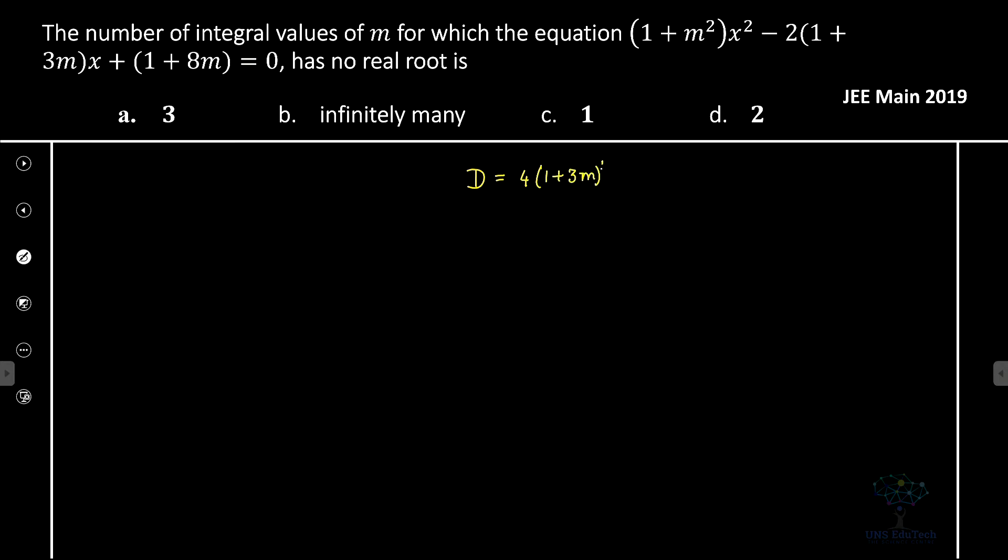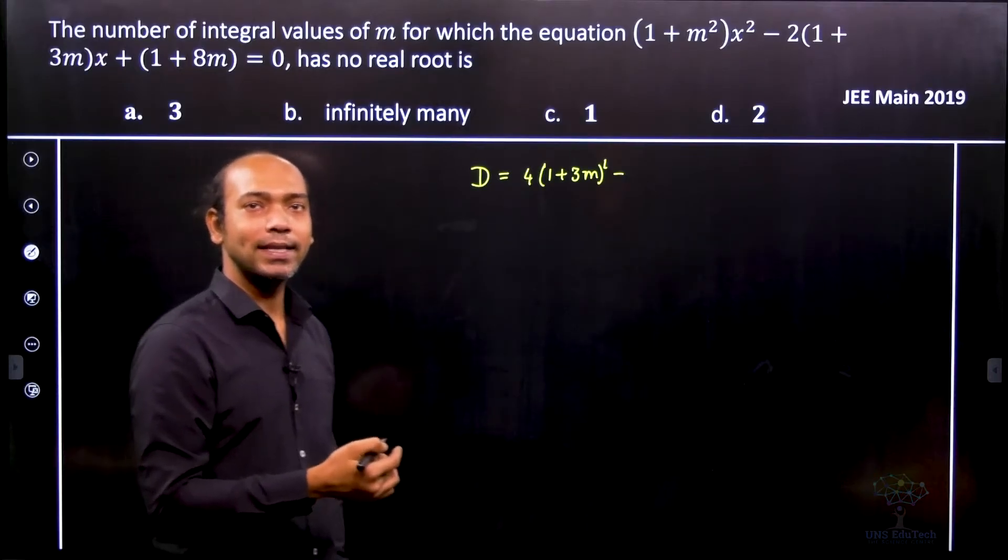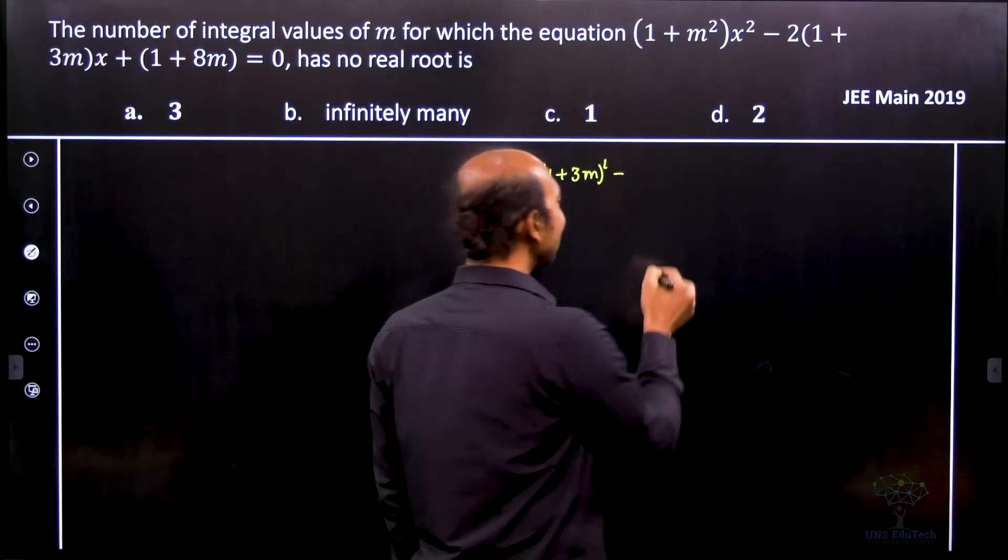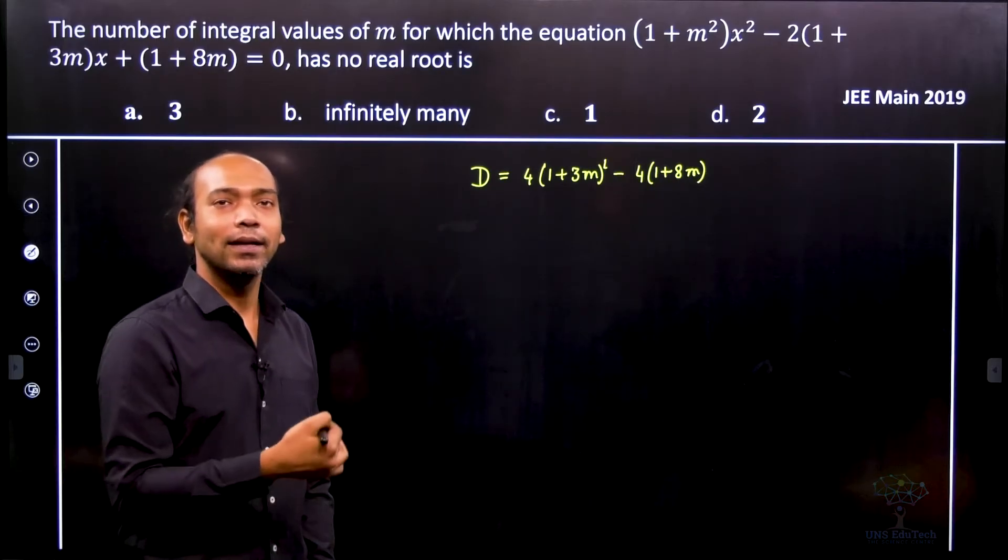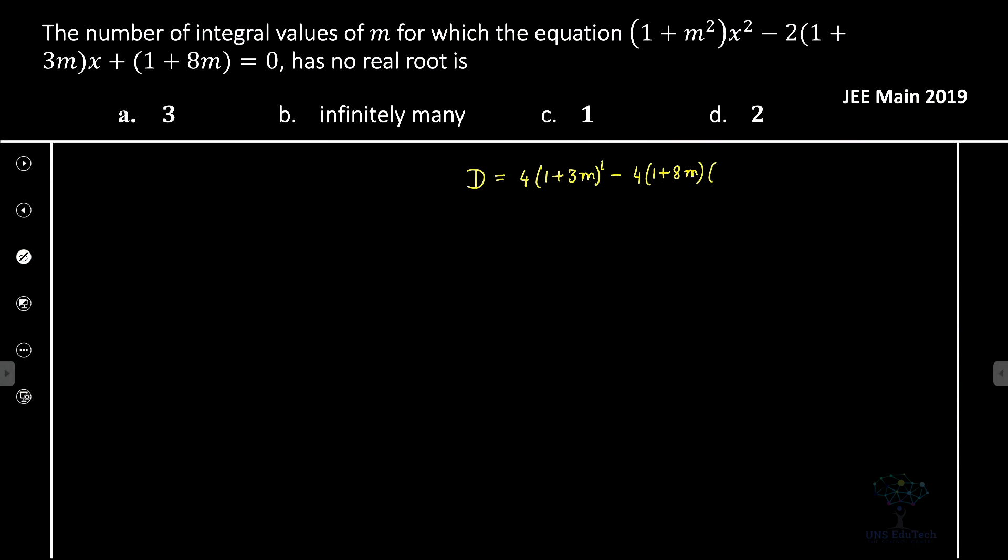That is b². Now, minus 4 into ac. So here we can see that it is actually minus 4 into (1 + 8m) and we are required to multiply it by a, which is (1 + m²). So that completes the discriminant.